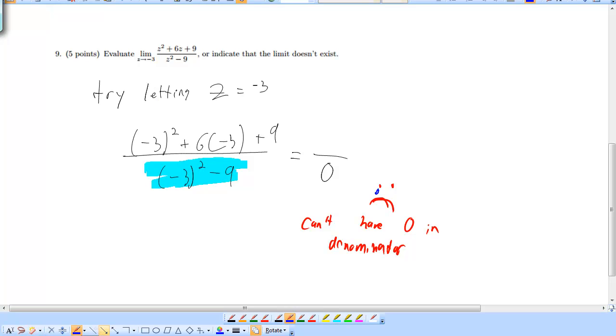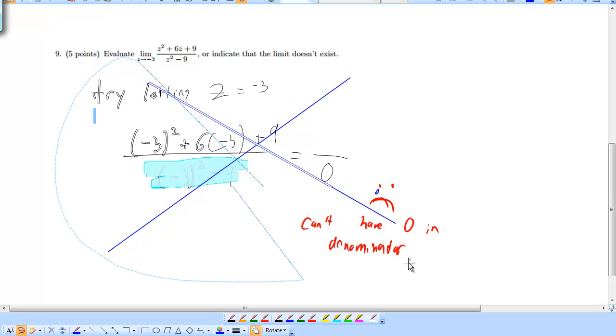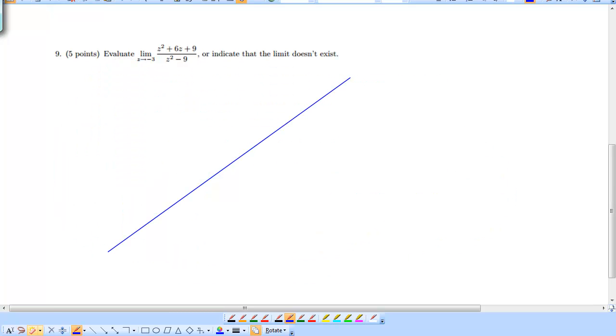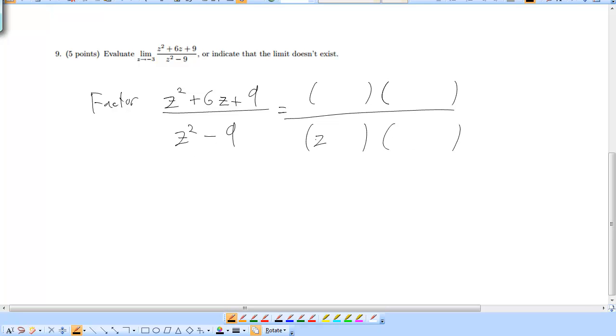This function is going to have discontinuity at negative 3. But if it's a removable discontinuity, which means that we could kind of cancel it out by factoring it. So factor your top, which is a trinomial. It's actually a perfect square trinomial, if you recognize it. And you factor the bottom also, which is a perfect square minus a perfect square. So factor that into two binomials. Your bottom is going to factor into z plus 3 and times z minus 3. Your top is going to factor into z plus 3 times z plus 3. And if you notice, you've got a z plus 3 on the top, you've got a z plus 3 on the bottom. So you can cancel out one of each.